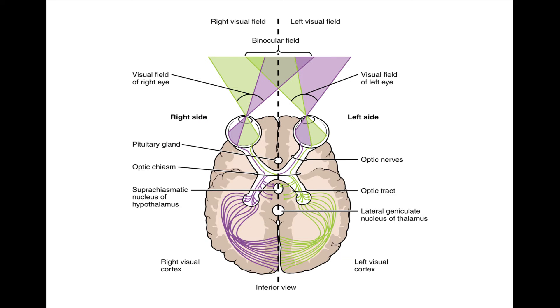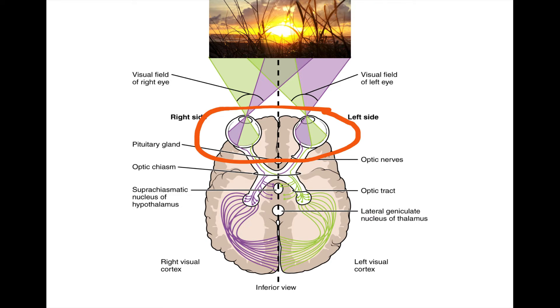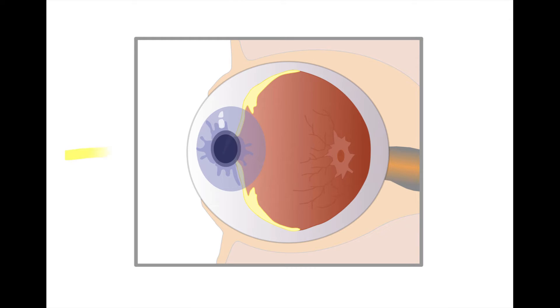Vision begins in the eyes. The eyes are a pair of specialized sensory organs whose primary function is to convert light from the environment into neural signals that can travel to the cortex and enter our conscious awareness. Light initially hits the cornea and then travels through the lens, which focuses it onto the retina at the back of the eye.